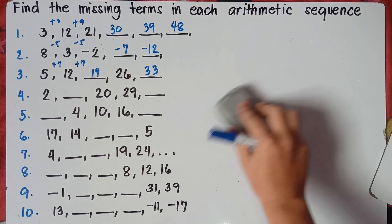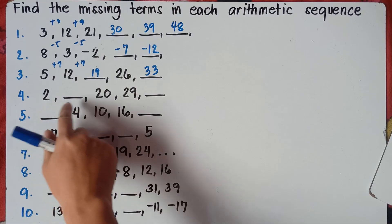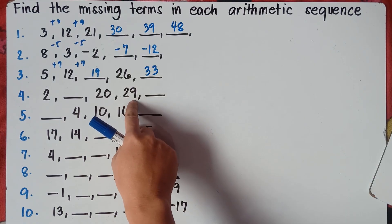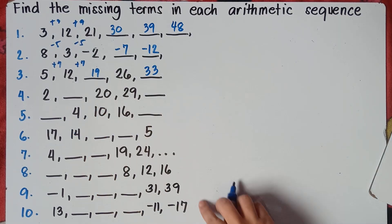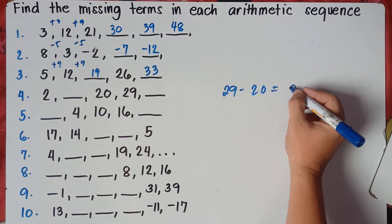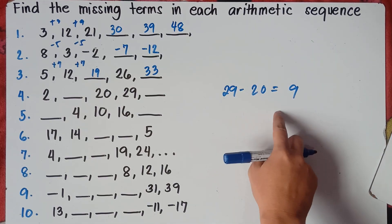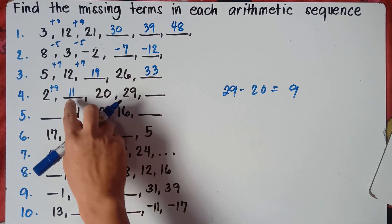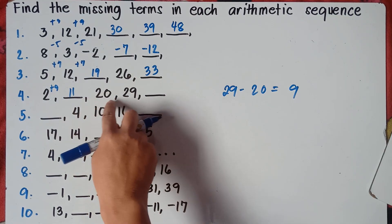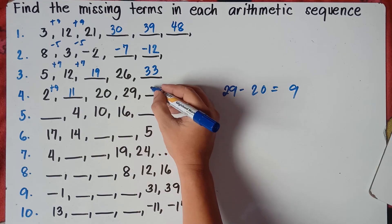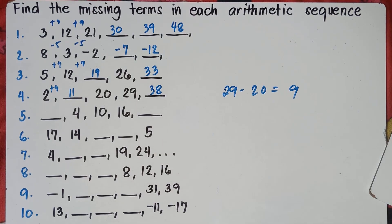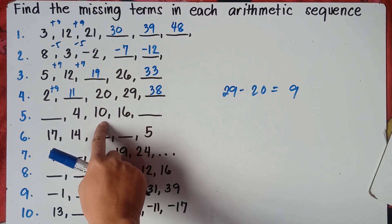Number 4: you have the first term but not the second term — you do have the third and fourth terms though. So subtract the fourth term minus the third term: 29 minus 20 equals 9. The common difference is 9. Starting from 2: 2 plus 9 is 11, 11 plus 9 is 20, 20 plus 9 is 29, 29 plus 9 is 38. Just subtract any term minus its previous term to find the common difference.